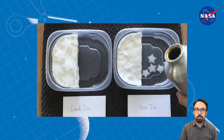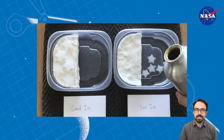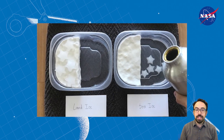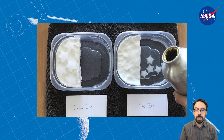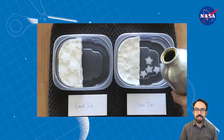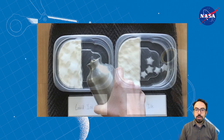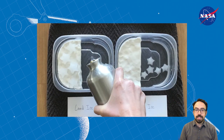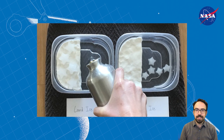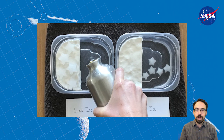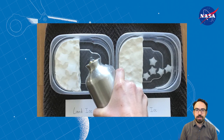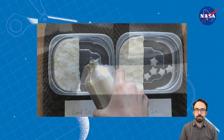Then pour cold water into the sea ice container until the ice floats. Make sure none of the ice is resting on the bottom of the container and that the water isn't higher than the land. Without disturbing the ice cubes on land, add water to the land ice container until the water level is about equal to the water level in the sea ice container.